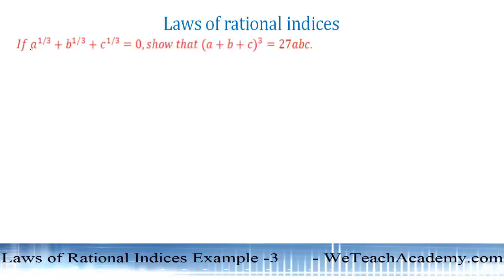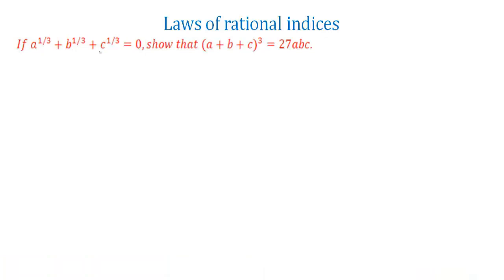So here, if a power 1 by 3 plus b power 1 by 3 plus c power 1 by 3 is equal to 0, then we have to show that a plus b plus c whole cube is equal to 27abc.